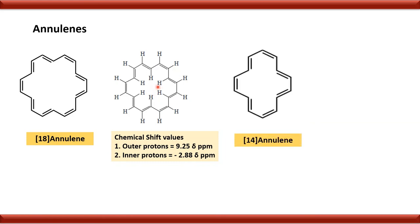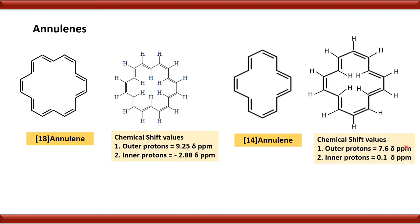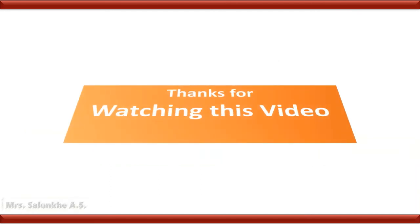Similarly, in case of 14-annulene, two signals are also obtained — one for outer protons and one for inner protons. For outer protons, the chemical shift value is 7.6 delta ppm, while for inner protons, the chemical shift value is 0.1 delta ppm. This is the anisotropic effect. Due to the anisotropic effect, we observe its influence on the chemical shift values of protons. Thank you for watching this video.